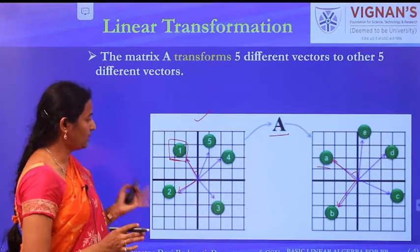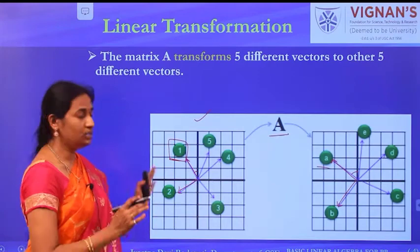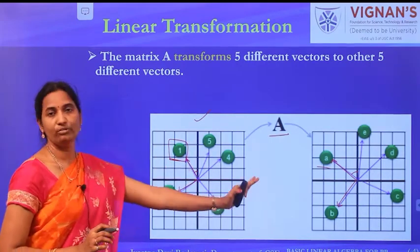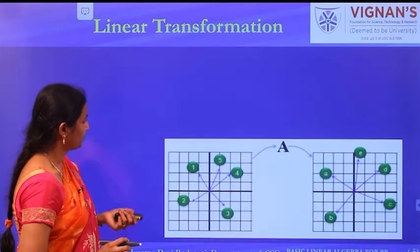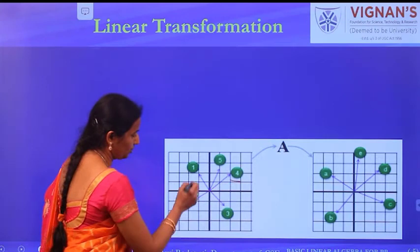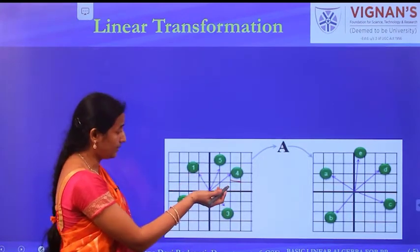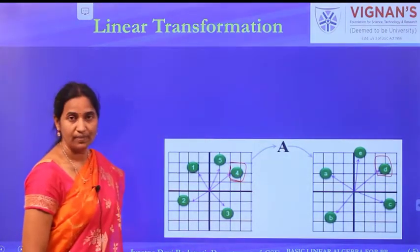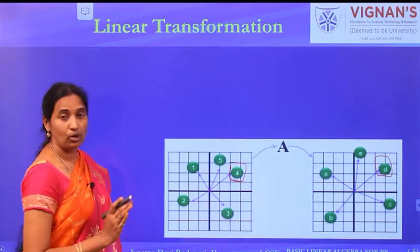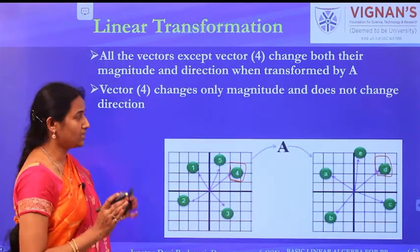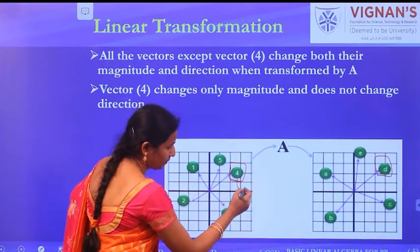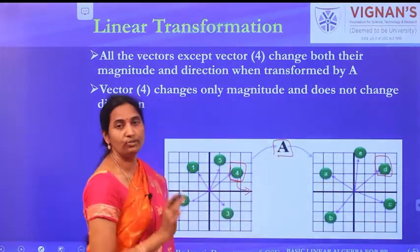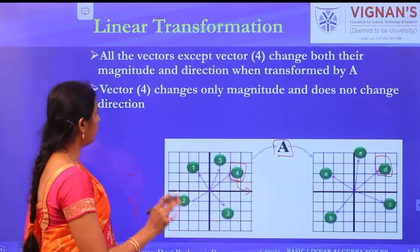The takeaway is: when projecting vectors from the original space to another space using linear transformation, in general both the magnitude and direction of the vector change. But there is a special vector — in the case of vector 4, there is no change in direction, only the magnitude changes. Such special types of vectors are called eigenvectors.